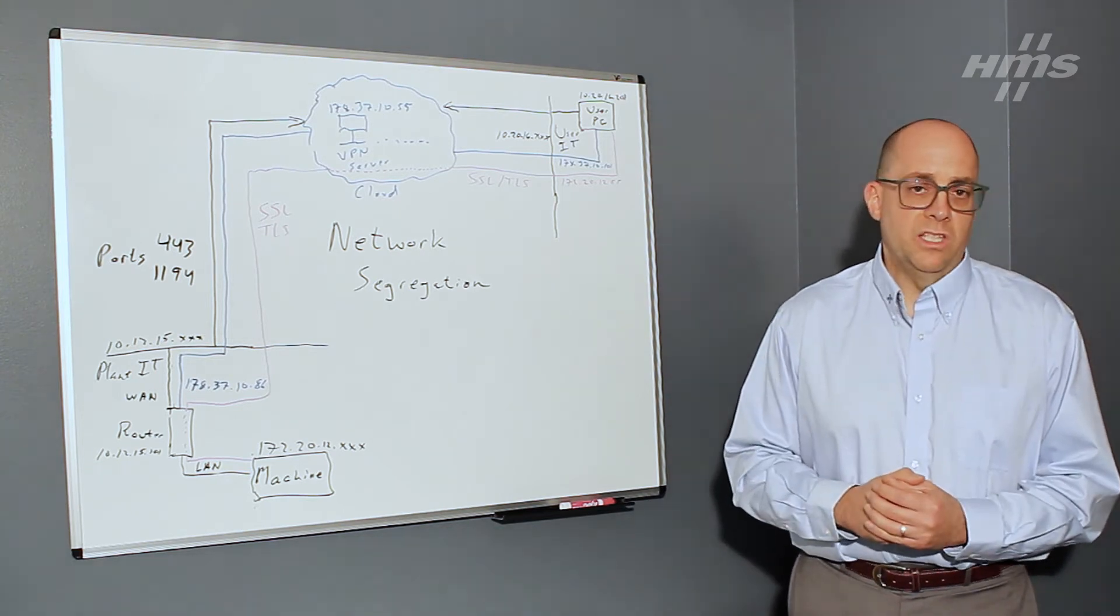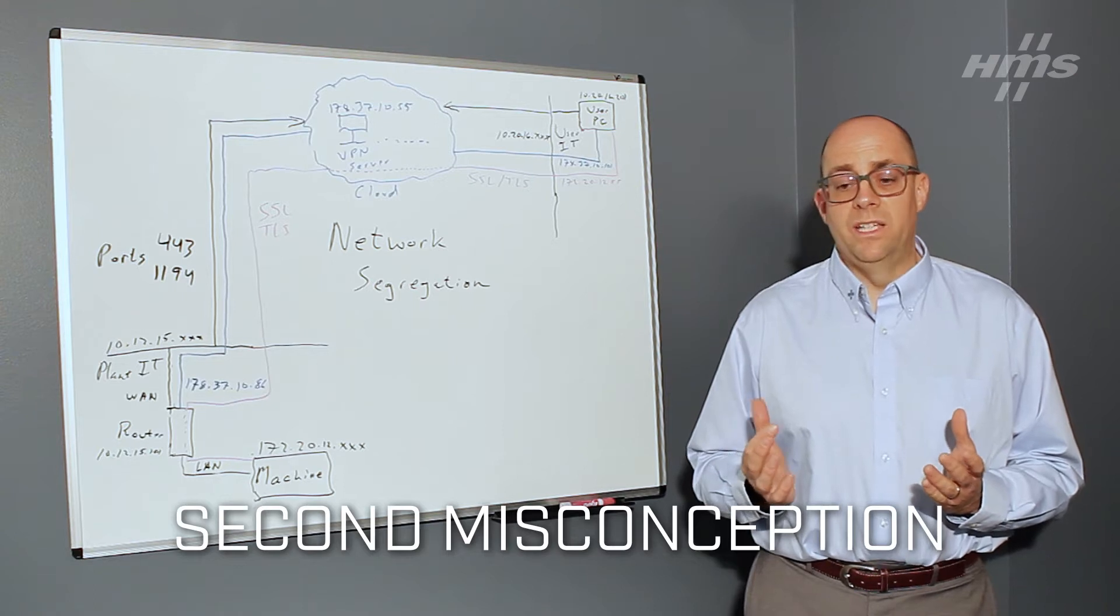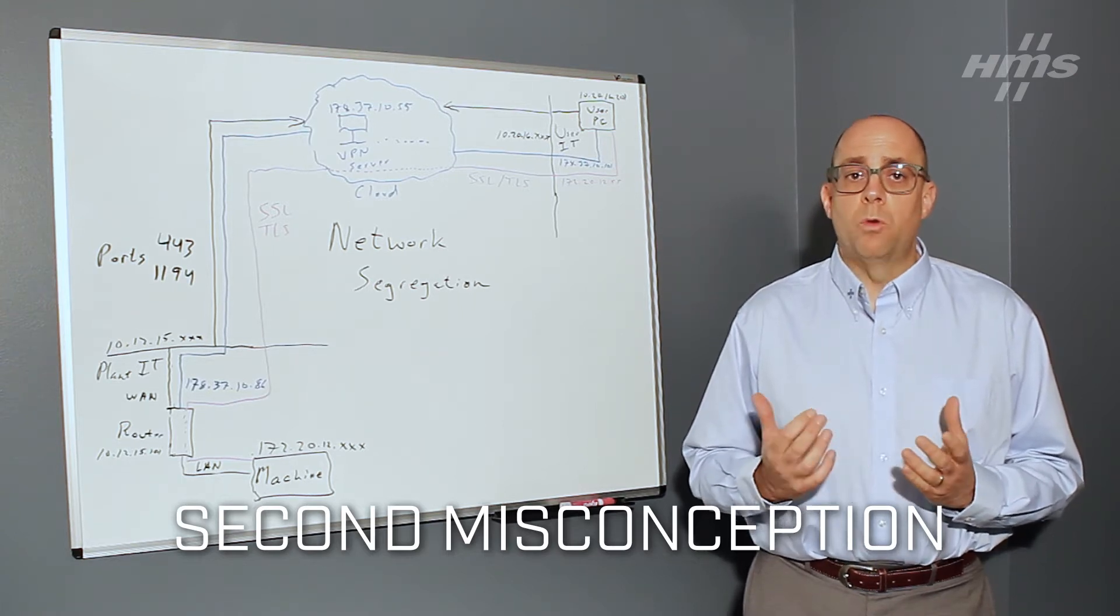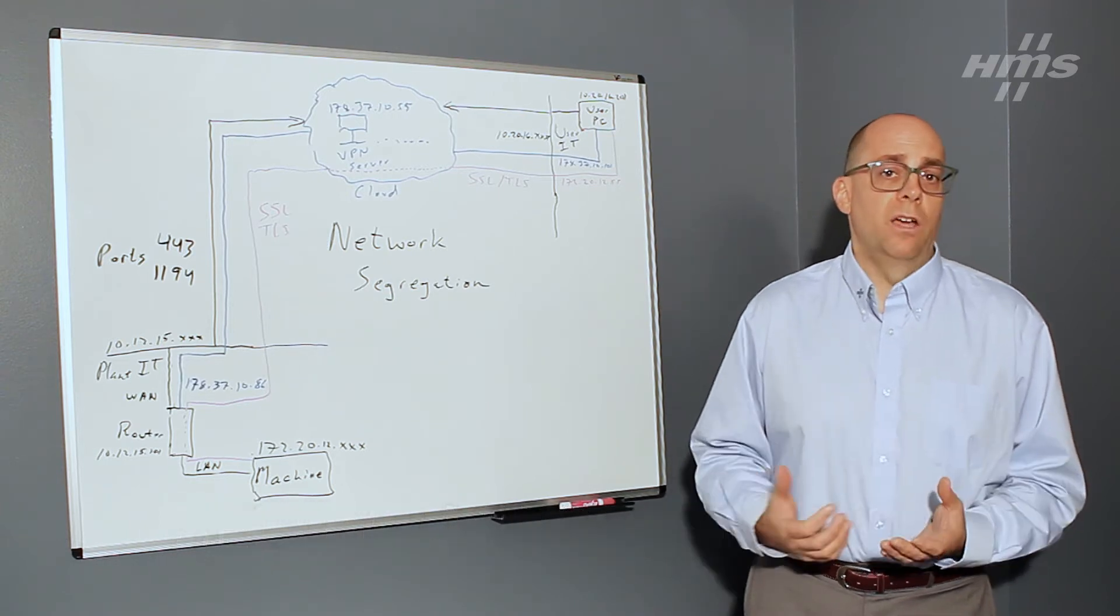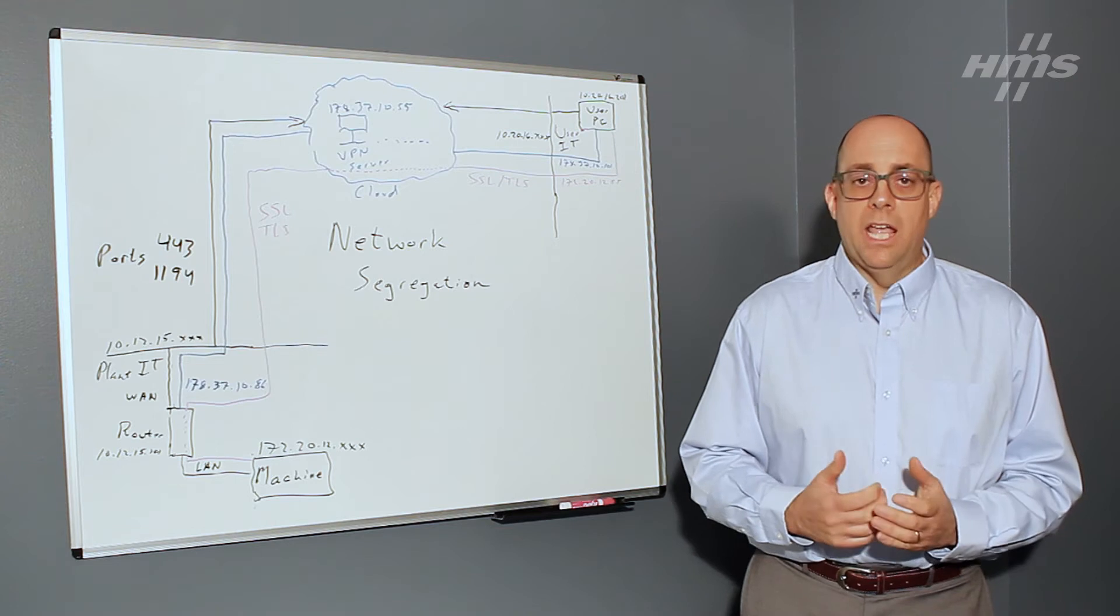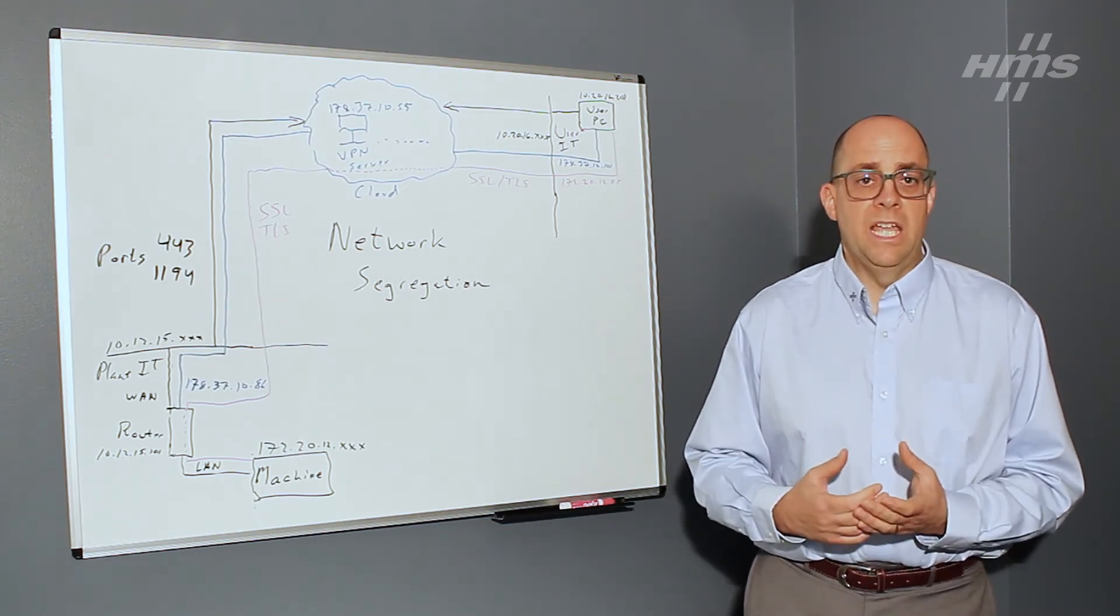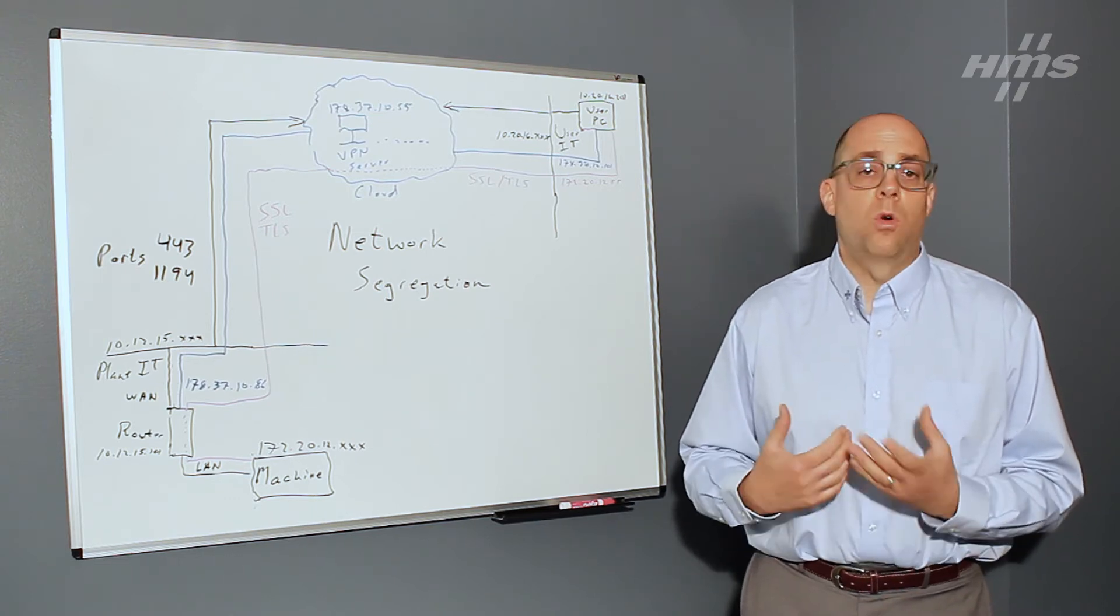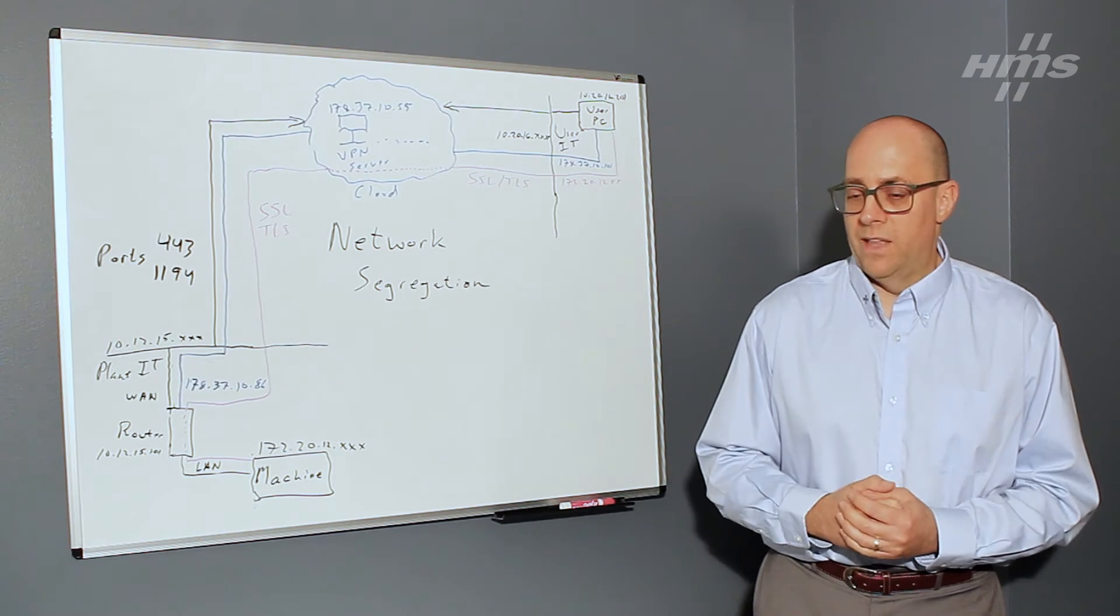So that's the first misconception I want to clear up there. The second misconception I want to cover is that enabling remote connectivity allows third-party actors or people outside of your facility to actually access your IT networks. And this is not true. In fact, many solutions that provide remote connectivity enable what is called network segregation, which is going to be the core topic that we're going to discuss today.